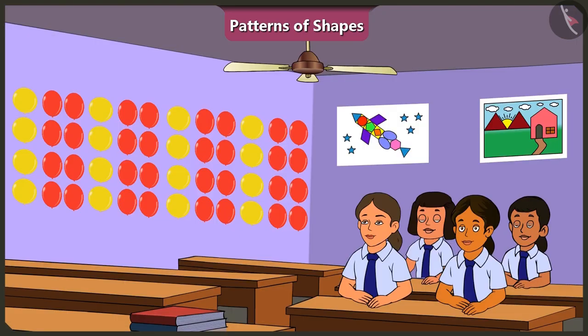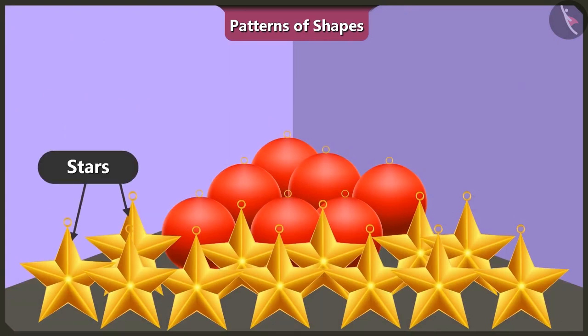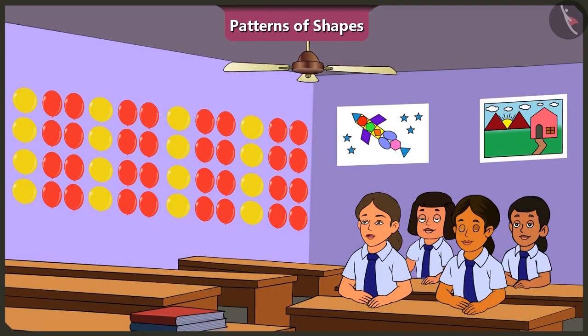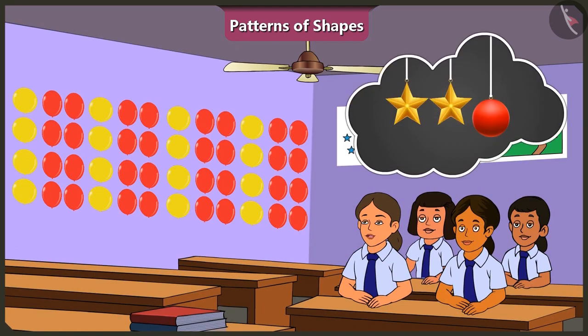Vinny, look over there. I can see some decoration materials in the shape of stars and spheres. We can make a toran out of these two shapes to decorate the door. Oh, yes. We can make a fantastic pattern with these. How? Oh, we can put a sphere after every two stars and we can create a beautiful toran by repeating this pattern.